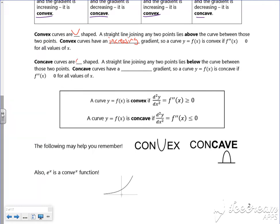Concave curves are n-shapes and they have a decrease in gradient there. Now all that's nice but this is the bit that you need to remember.